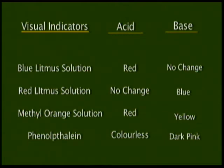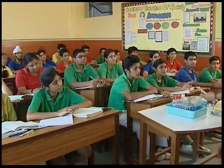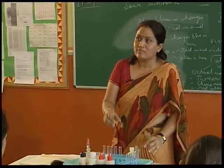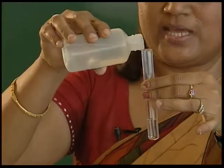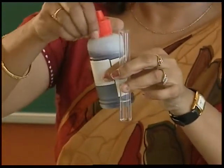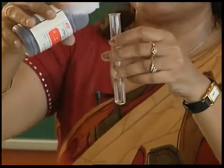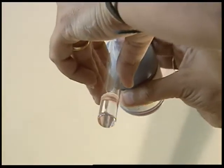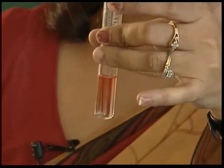We have two samples and we don't know which one is an acid and which is a base. With the help of indicators we will find out. When we take Sample A in a test tube and add blue litmus solution, let's see whether the color changes. Can you see the color change? Yes — it has changed to red. So we ascertain that Sample A is an acid.